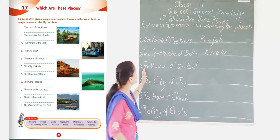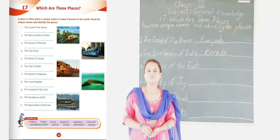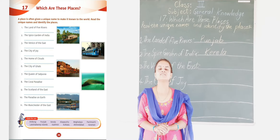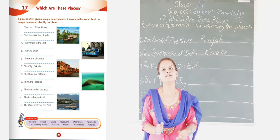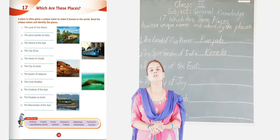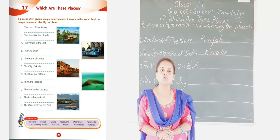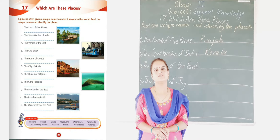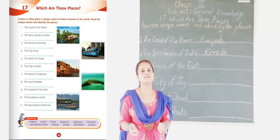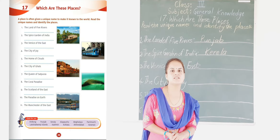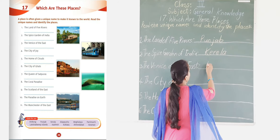The next one is the Venice of the East. This place is situated in the state of Kerala and it is famous for lagoons, beaches, backwaters, and is a tourist place. This place is called Alappuzha. Alappuzha is the Venice of the East.